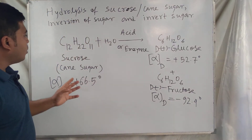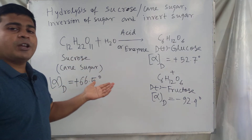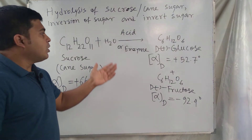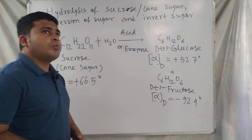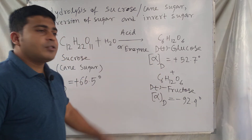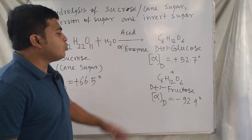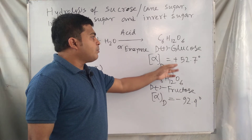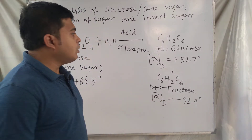On hydrolysis of sucrose — called cane sugar — by acid such as hydrochloric acid, or enzyme like invertase, two products are formed: glucose and fructose in equimolar amounts. The specific rotation of glucose is +52.7 degrees and the specific rotation of fructose is -92.4 degrees.